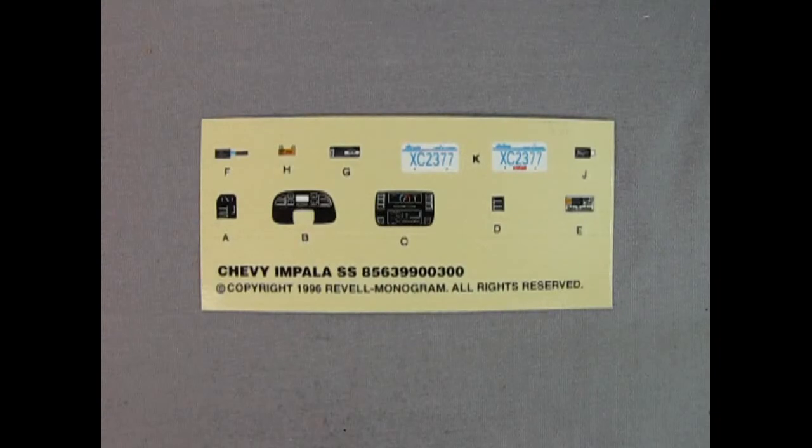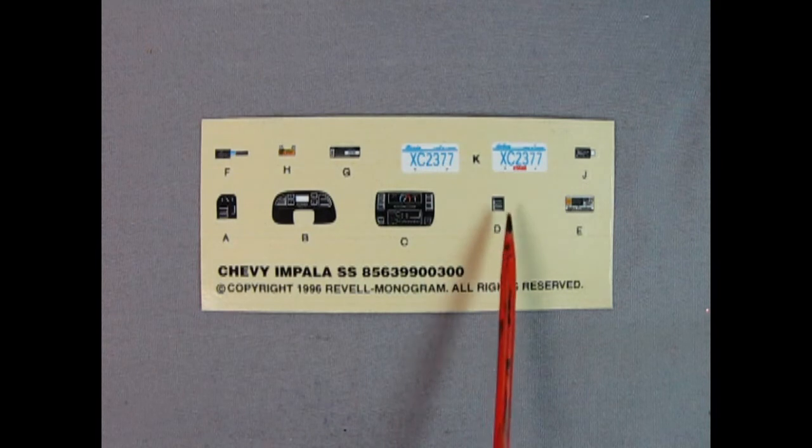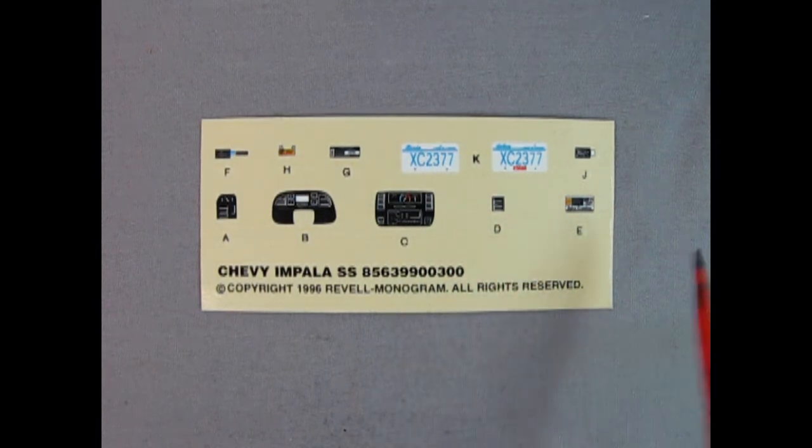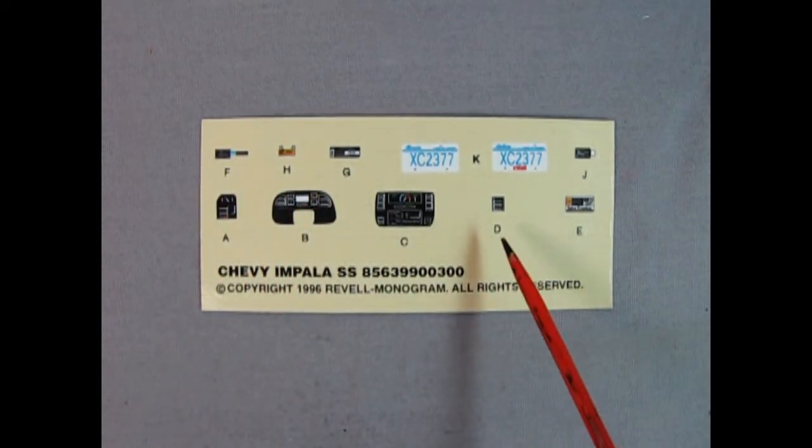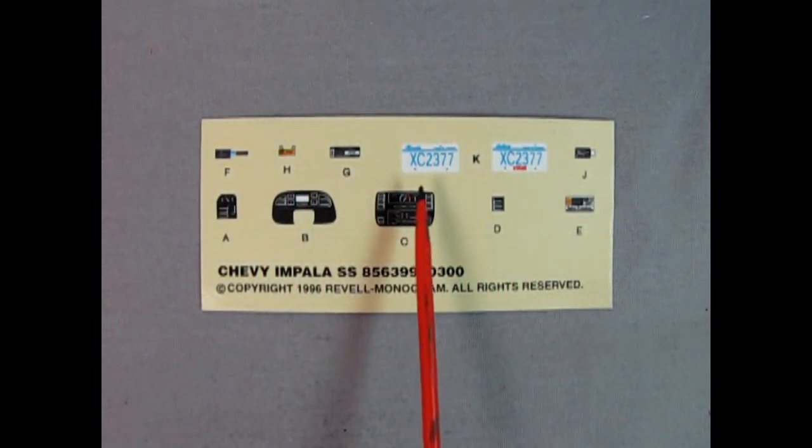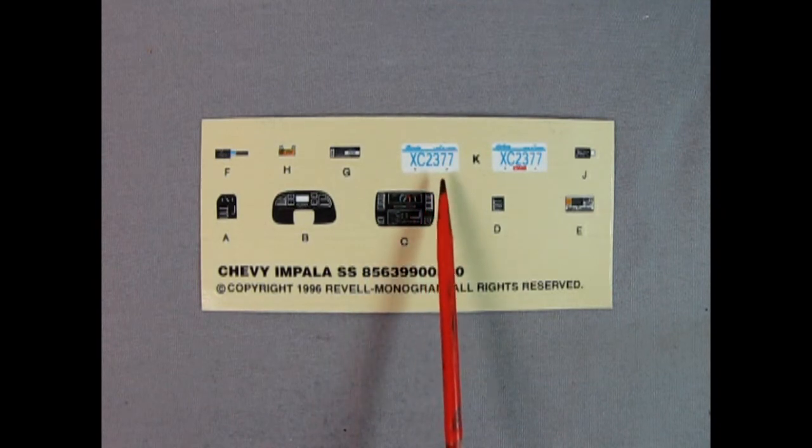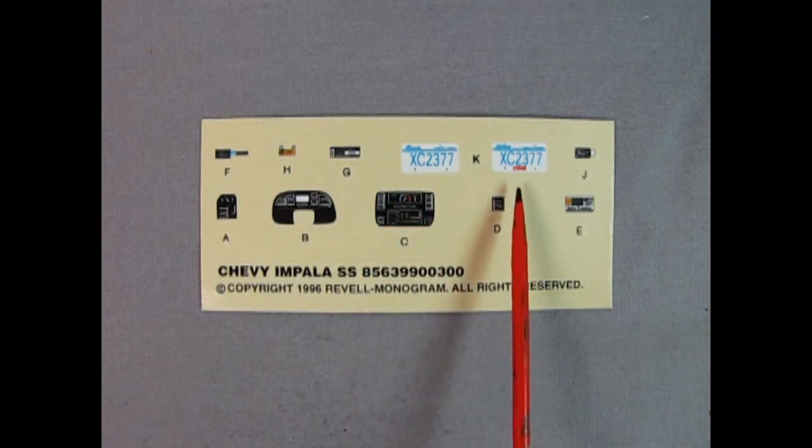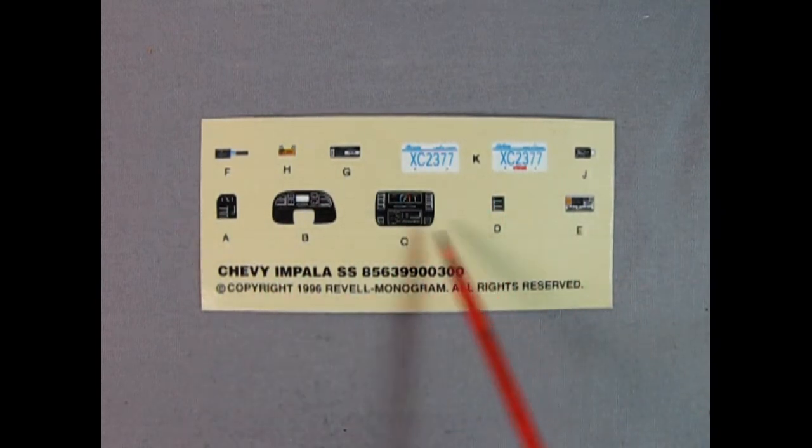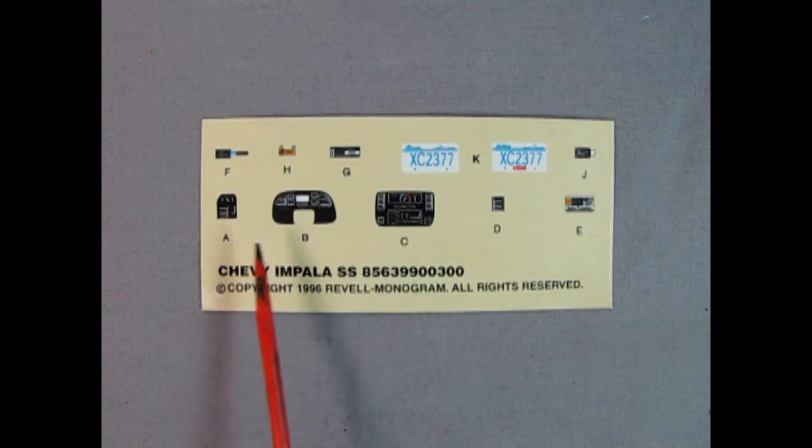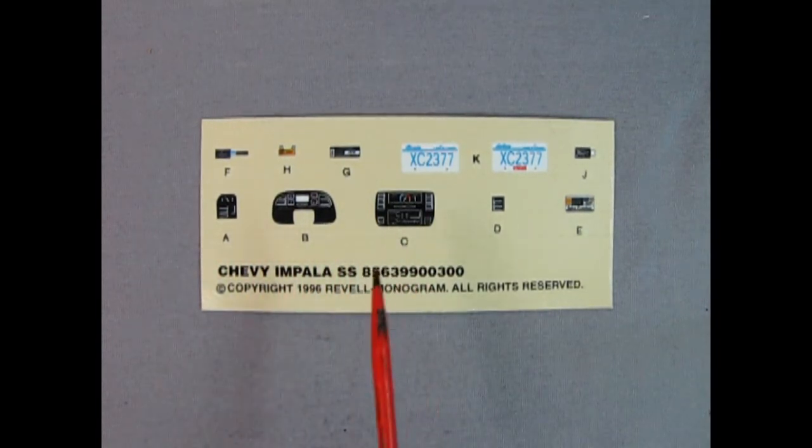And here we have our decal sheet and these three nice ones make up the dashboard as well as D that looks like a vent actually. And then these are all underneath the hood. So again really cool. And then you get your Illinois XC2377 license plates and this one has a registration sticker. So again a really nice detail in here and look at how good that gauge is right in there. That's on our radio. Again really really awesome stuff.